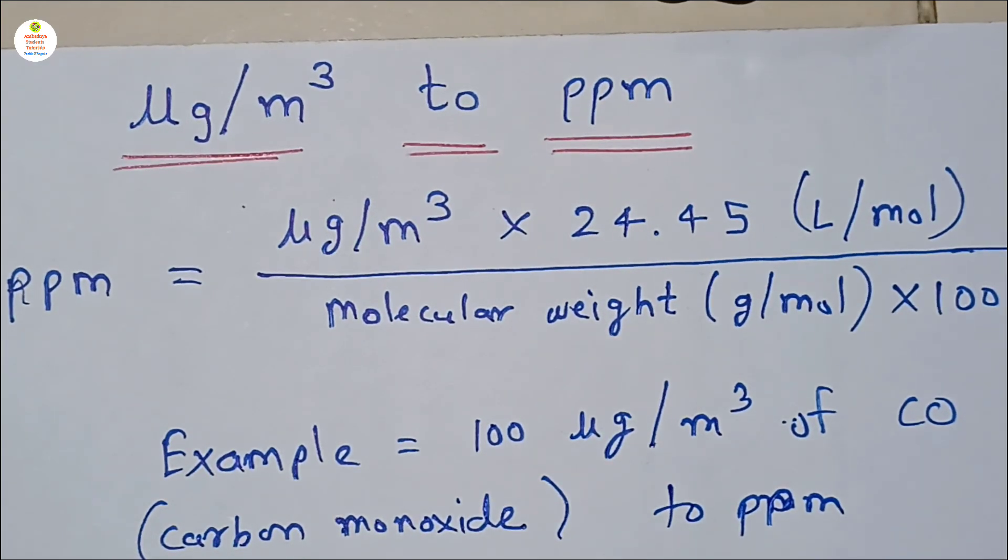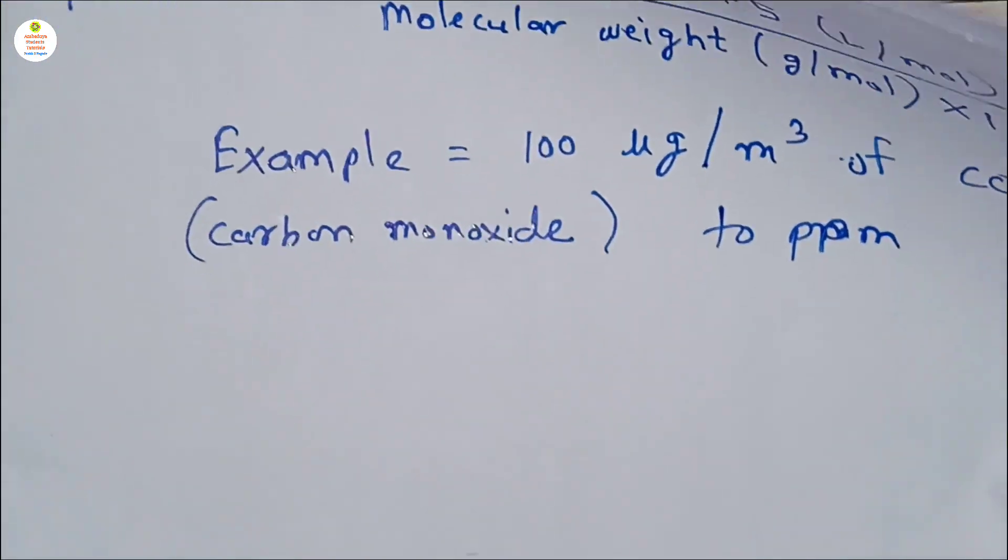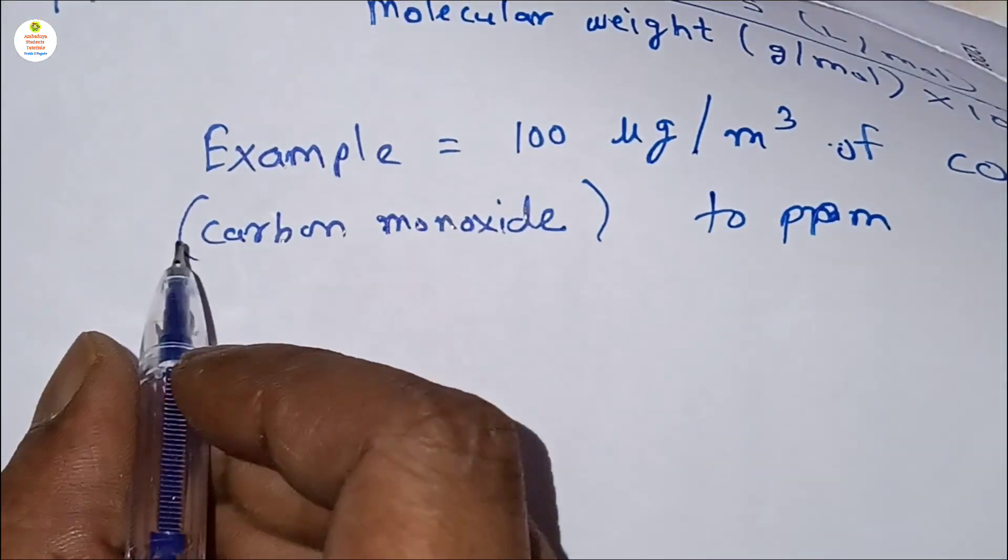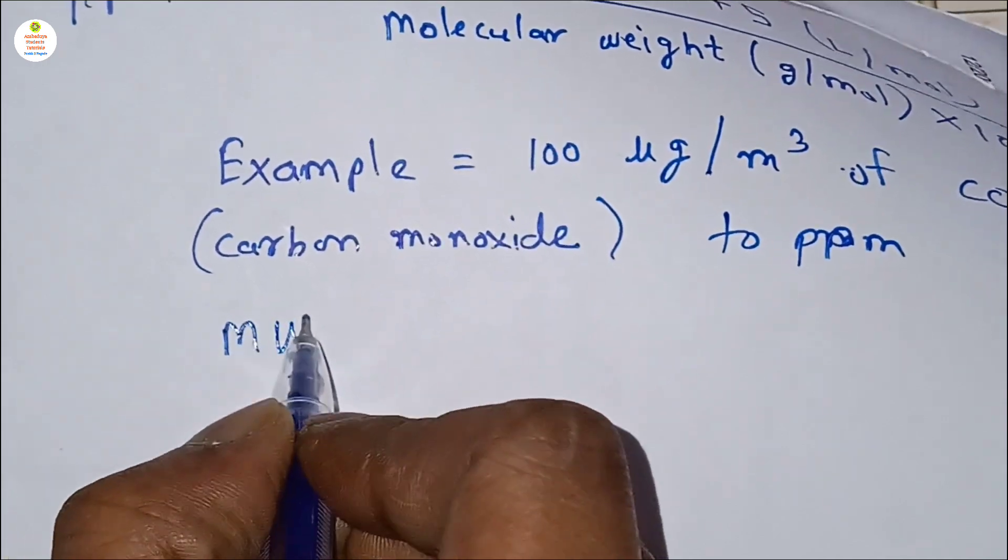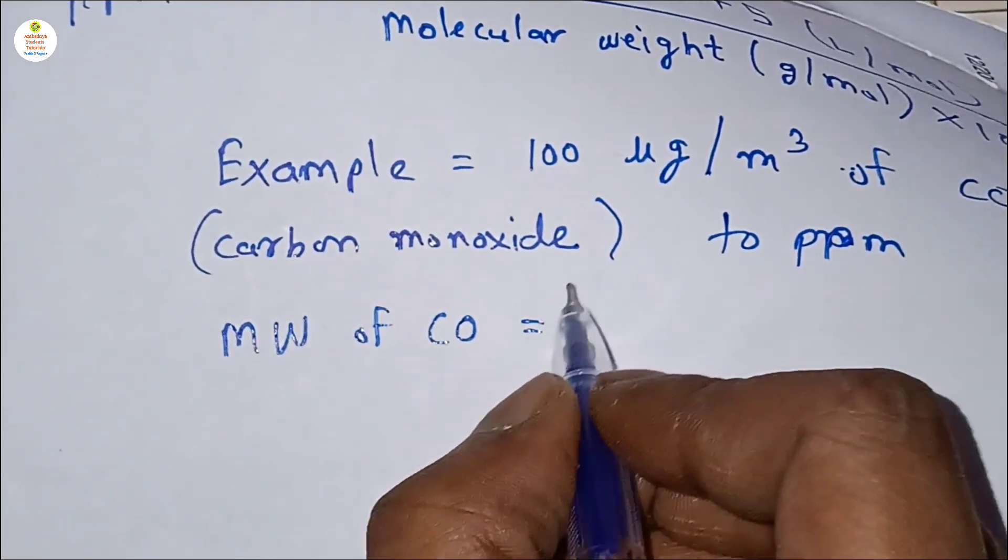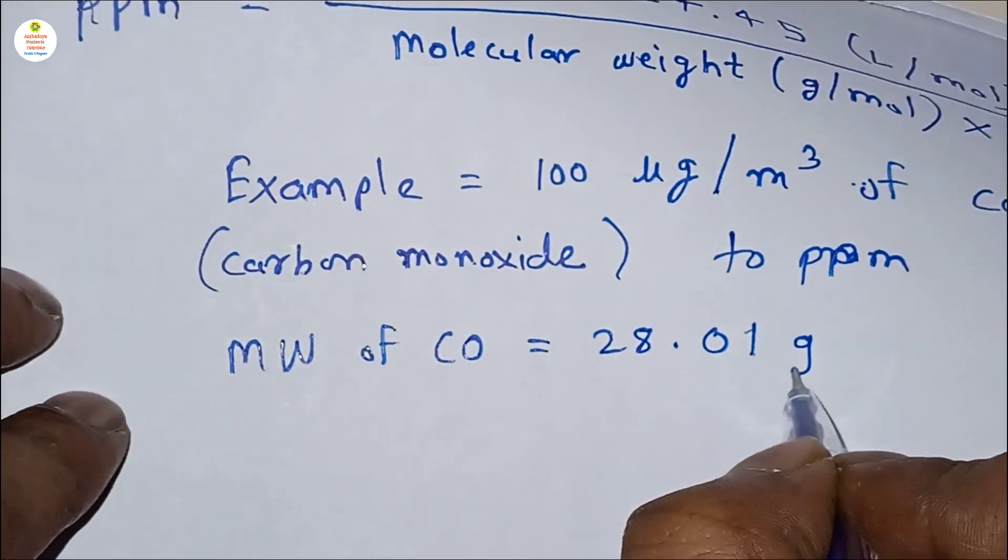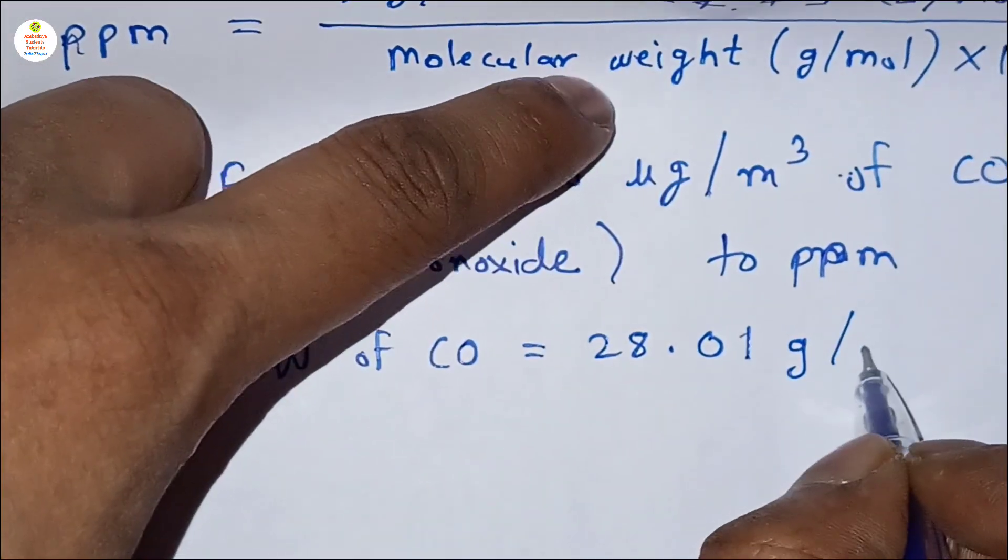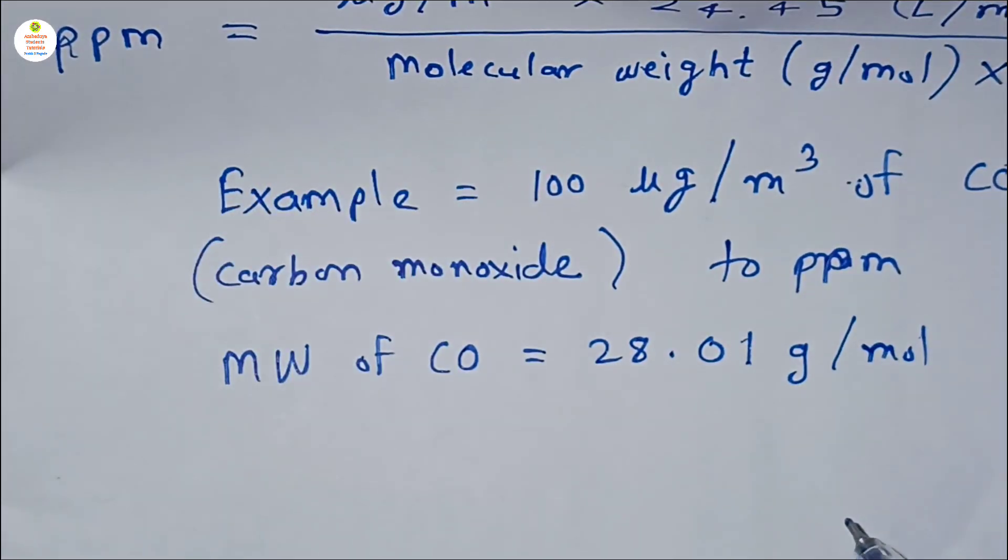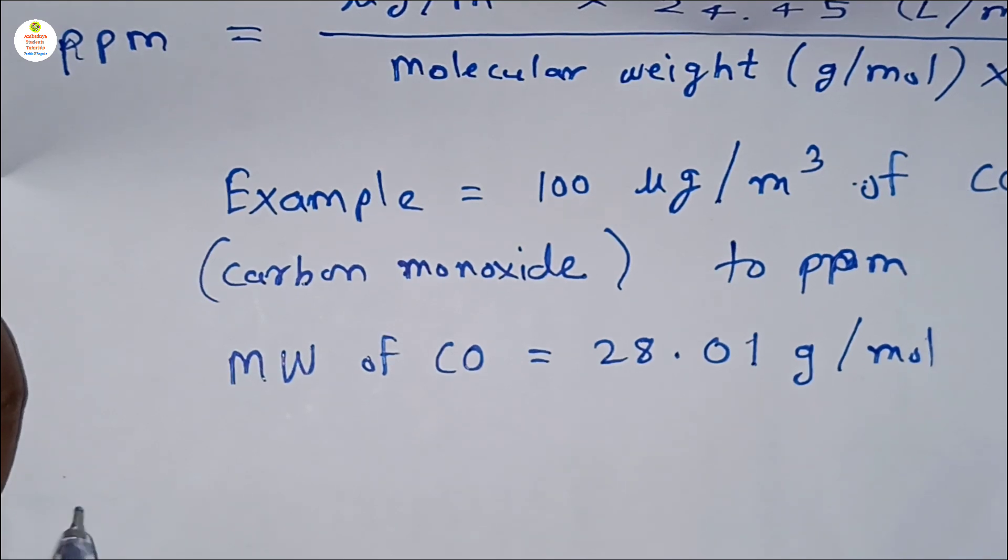Now here see, we will first write down the molecular weight of carbon monoxide which is here 28.01. So here see, molecular weight of CO, that is carbon monoxide, is 28.01 gram per mole.